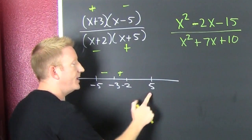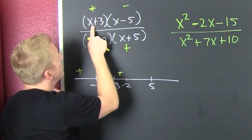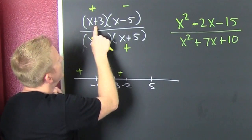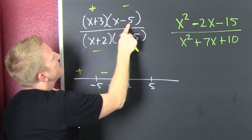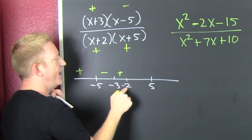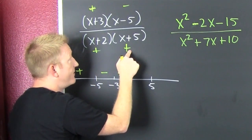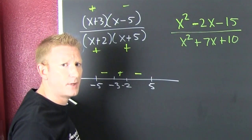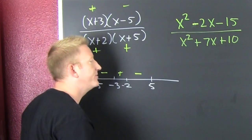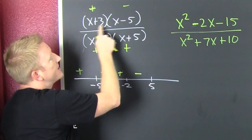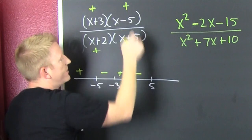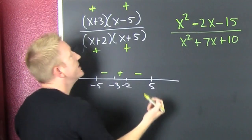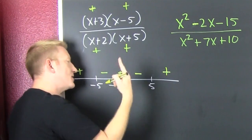Now I pick something in the interval between minus 2 and 5 — I'll pick 0. 0 plus 3 is positive, 0 minus 5 is negative, 0 plus 2 is positive, 0 plus 5 is positive — odd number of minus signs, so this interval is minus. Then past 5, I use 10: 10 + 3 is positive, 10 - 5 is positive, 10 + 2 is positive, 10 + 5 is positive — all positive, so it's plus out there.